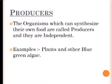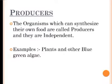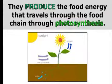Let me discuss about producers first. The organisms which can synthesize their own food are called producers and they are independent. They can prepare their own food and cannot depend upon other organisms. Examples include plants and blue-green algae. Producers can prepare their own food by the process called photosynthesis.